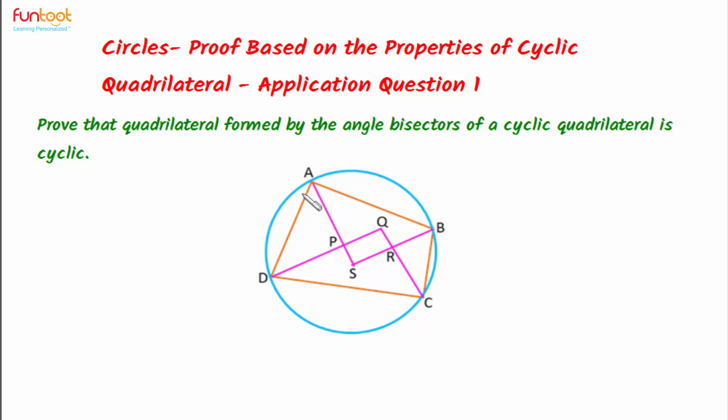So ABCD is a cyclic quadrilateral and AS, BS, CQ and DQ are the angle bisectors of this cyclic quadrilateral. We have to prove that quadrilateral PQRS formed by these angle bisectors is also a cyclic quadrilateral.